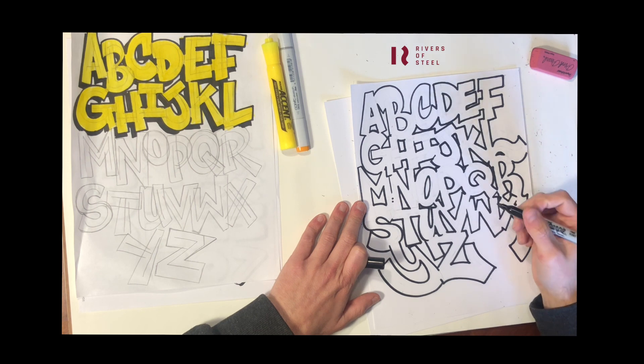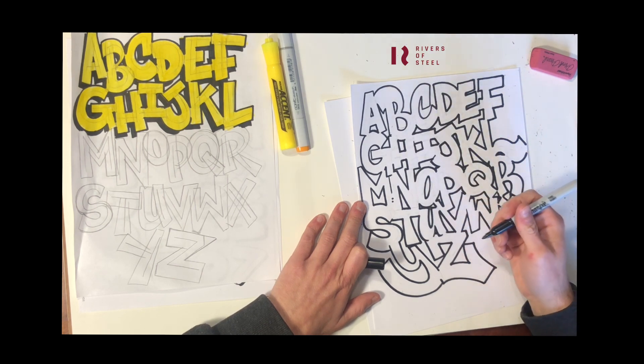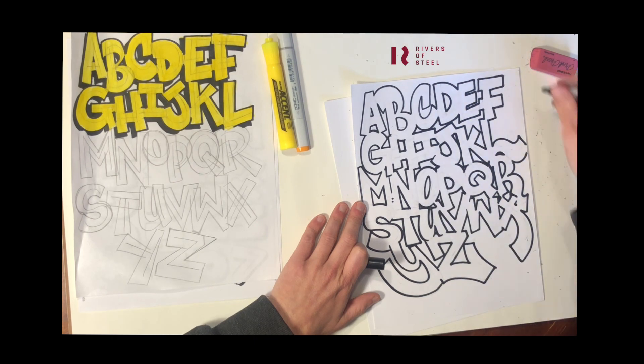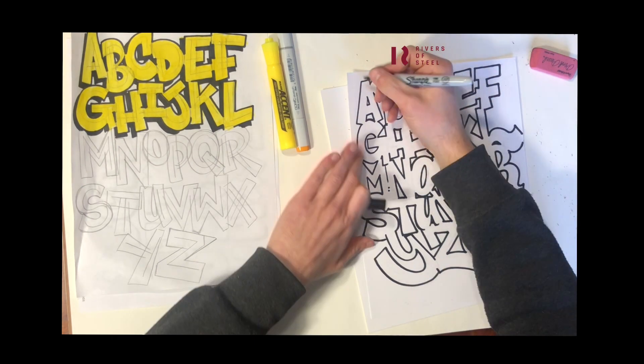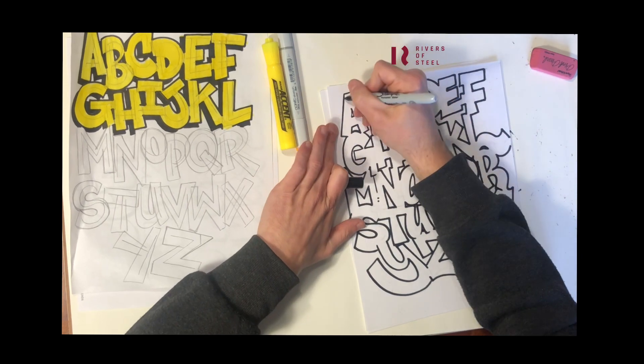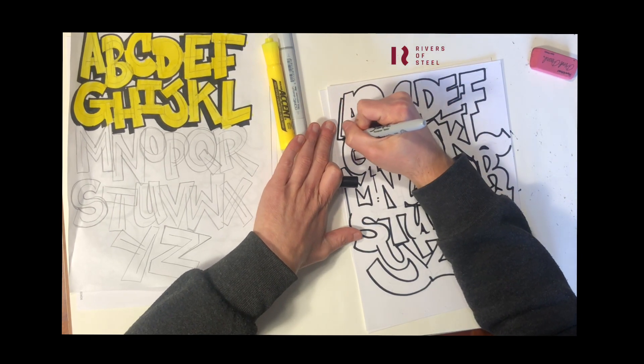And then from here, I'm going to add a drop shadow going to the down and to the left. My light source would be in the upper right. I'm going to go ahead and add this around all the letters now.